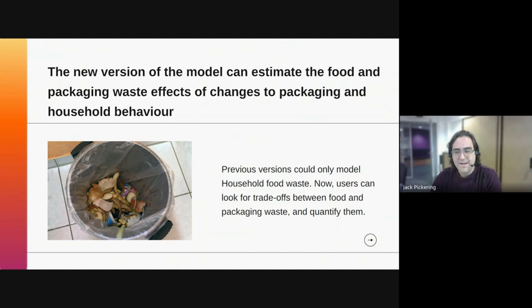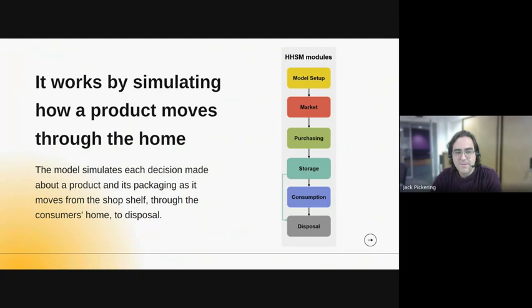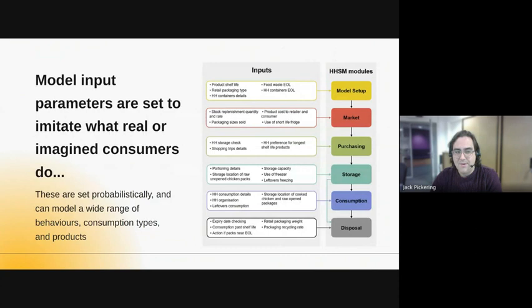The model essentially works by simulating how a product moves through the home with its packaging — from the market to the cupboard or fridge, to being consumed, and then being disposed of. It simulates single products moving through this trajectory from the shop to the home to disposal, over and over again many many times. For each section in this structure there are input parameters which affect how a household behaves or how the product is configured — things like product size, packaging weight, how often the consumer eats, how much they eat in a meal, and other factors. Some of these parameters can be set probabilistically, as distributions, or switched on or off, and they can be customized depending on what data you have.